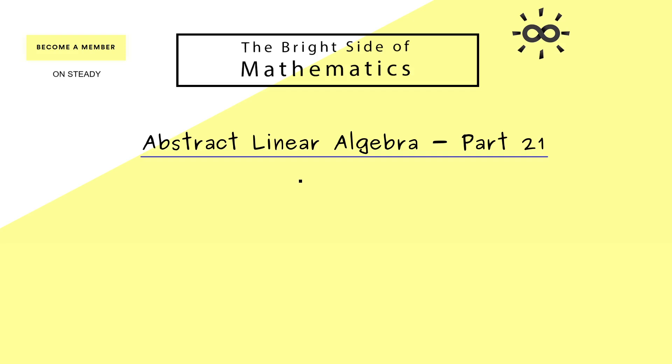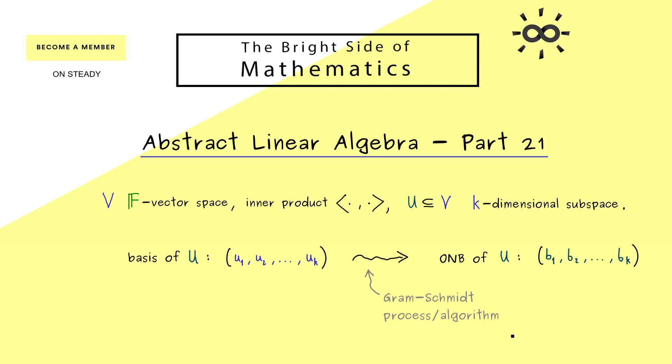This can be very helpful to understand the algorithm and the example we explain now. And here the setup is the same as in the last videos, we have a general F-vector space, but together with an inner product. Therefore, for every finite dimensional subspace U, the term ONB, Orthonormal basis, makes sense. However, if you just take a basis of this finite dimensional subspace, it's in general not an ONB. And that's where the Gram-Schmidt process or algorithm comes in. Simply because it's able to transform the original basis into a new one, which is an ONB.